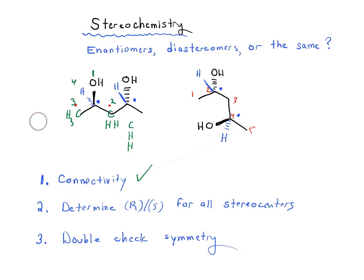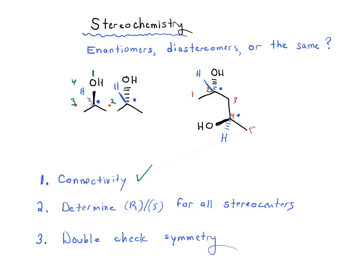Let's clean this up and leave the hidden hydrogens as they are. Now we can figure out R and S. Going 1, 2, 3 — notice how it's going clockwise. So that means it's going to be R.